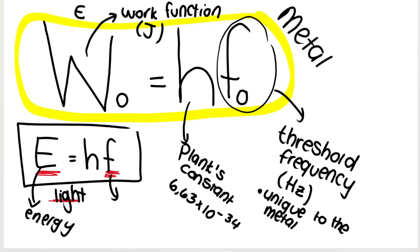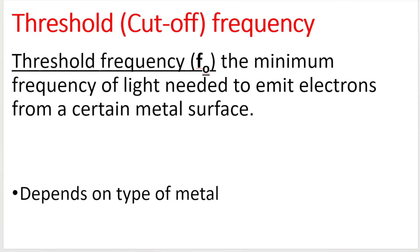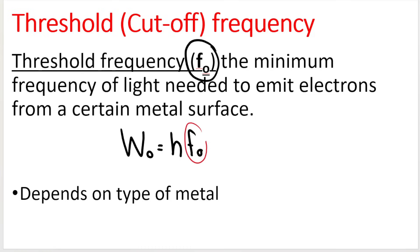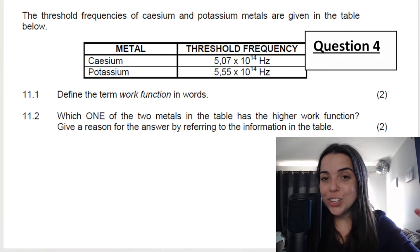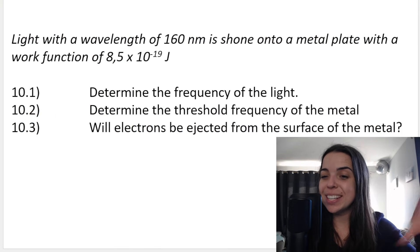The definition for threshold frequency — also known as cutoff frequency — is the minimum frequency of light needed to emit electrons from a metal's surface. We use threshold frequency to calculate work function. Work function is directly proportional to threshold frequency, because H is a constant. The higher the frequency needed to emit an electron, the more energy we need. In the next lesson, we'll go over questions on work function and threshold frequency — you don't want to miss it.